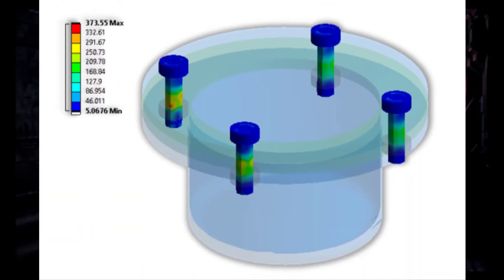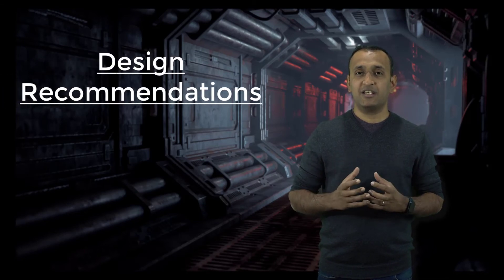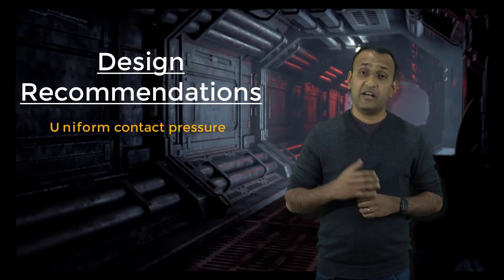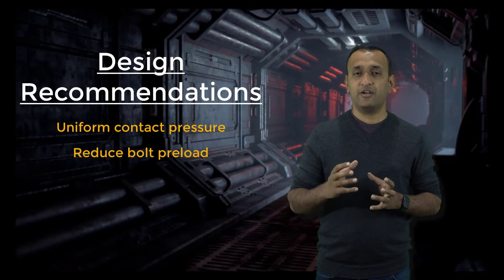But before we propose this design change, we need to check how the bolts selected for this design are performing under the current preload. To do this, we'll plot the equivalent stresses developed in the bolts. We see that a maximum stress of 373 MPa is generated in the shank portion of the bolts. The bolts are made of structural steel material, which usually undergoes plastic deformation at a stress of 275 MPa. So, the current preload exceeds the proof load of the bolts, and therefore we must reduce the preload applied.